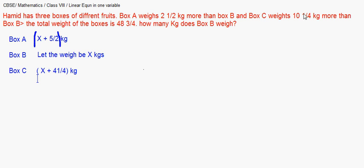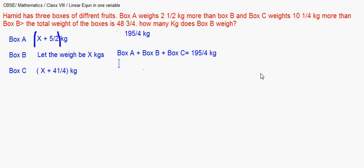The total weight is 48 and three-quarters, which converts to 195/4 kg. So the equation is: weight of box A plus box B plus box C equals 195/4 kg. Substituting our expressions: (x + 5/2) + x + (x + 41/4) = 195/4.